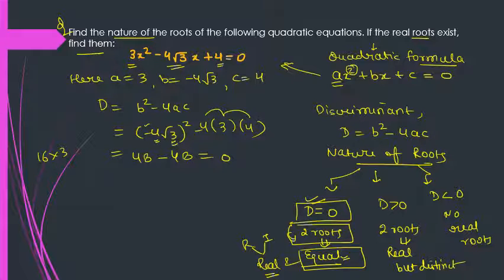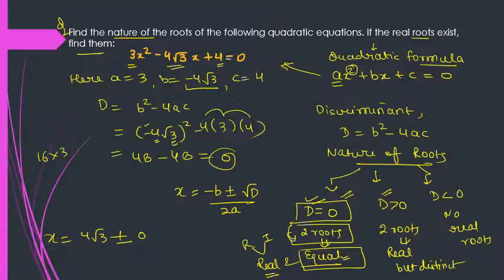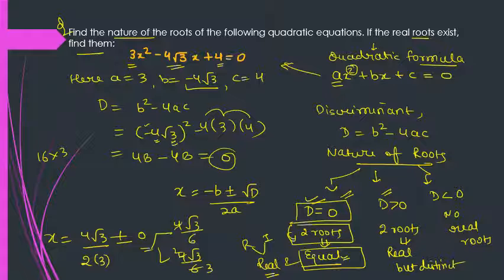So how you will find them? If you will find out that D is zero or greater than zero, then you can get your result by using x = (-b ± √D) / 2a. So your value is minus b, that means minus minus plus 4√3 plus minus √D, which is zero. So nothing is required here. 2a. So that means both of the roots are 4√3 / 6, which equals 2√3 / 3.